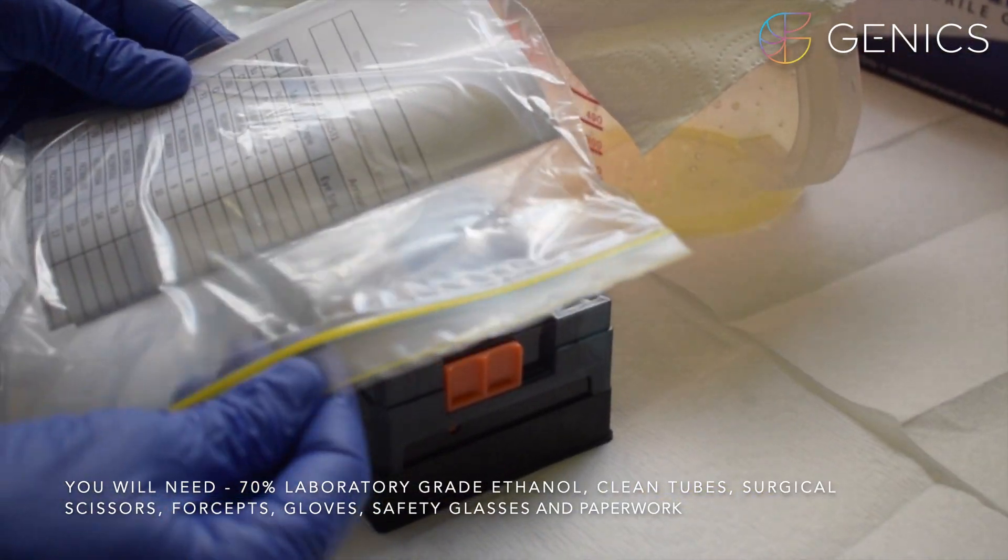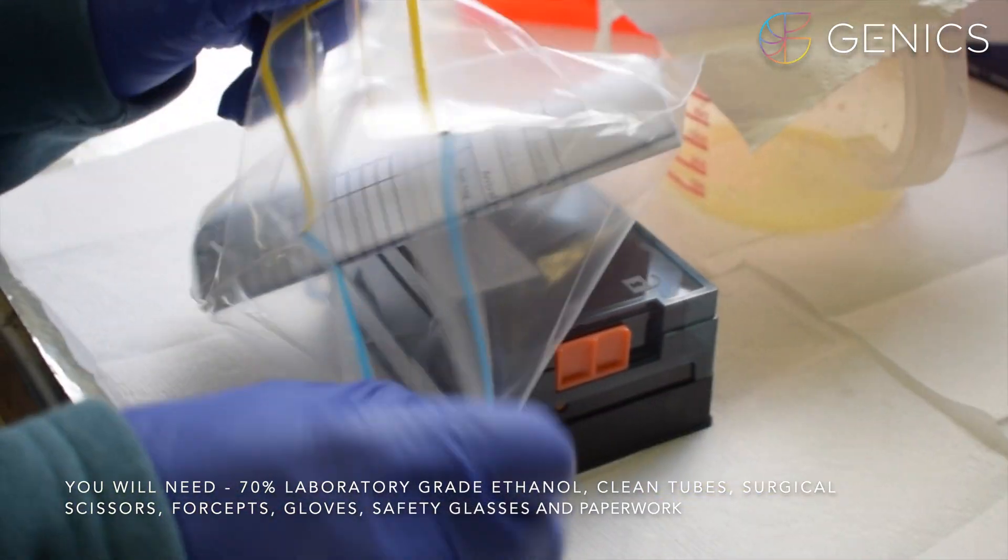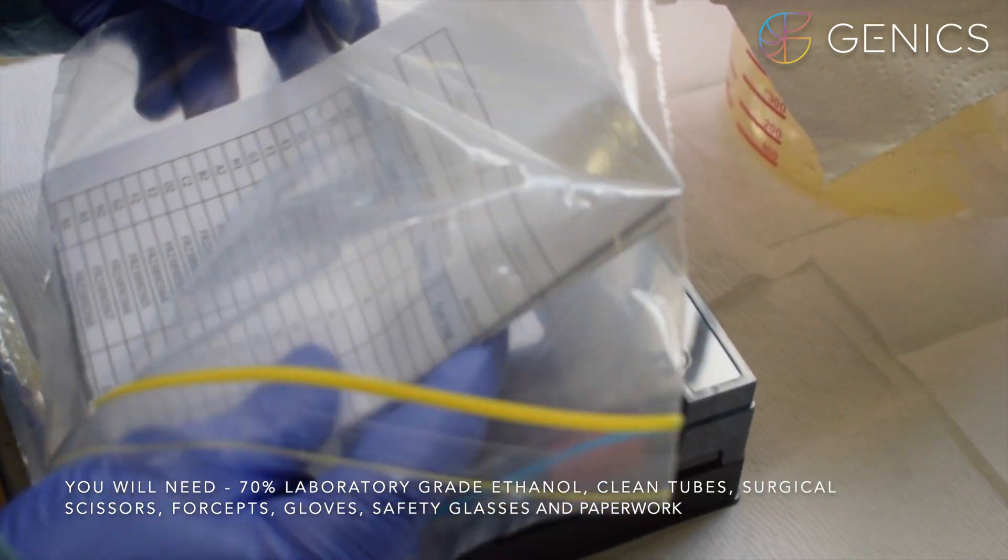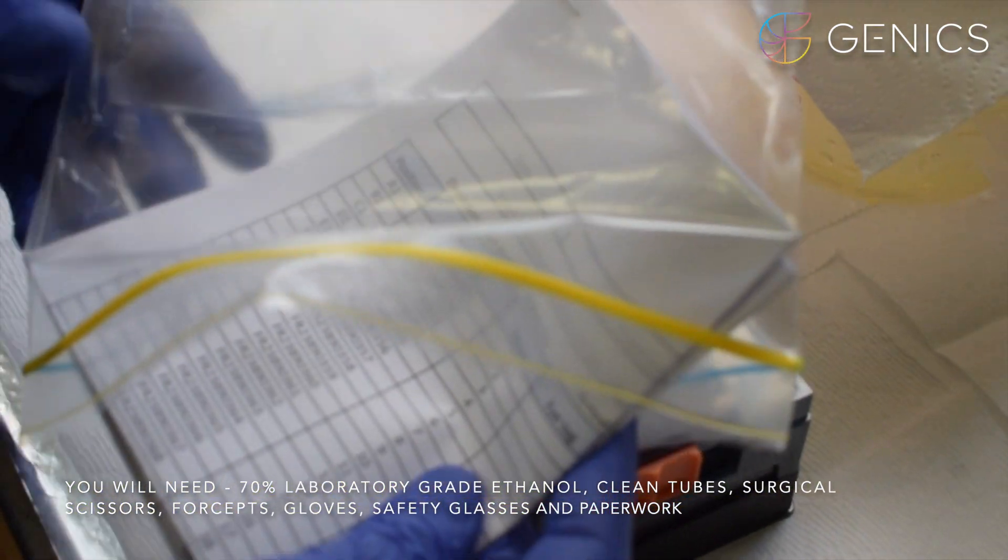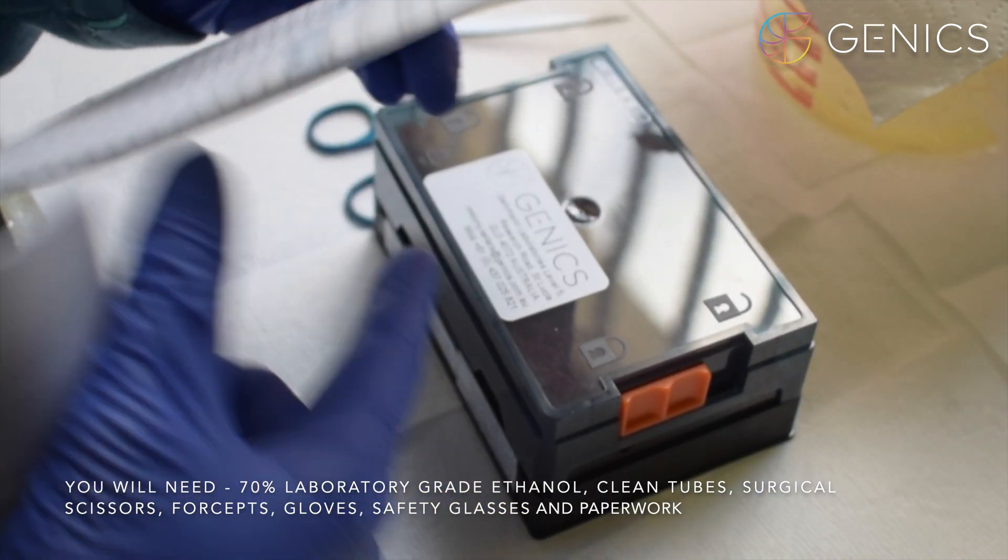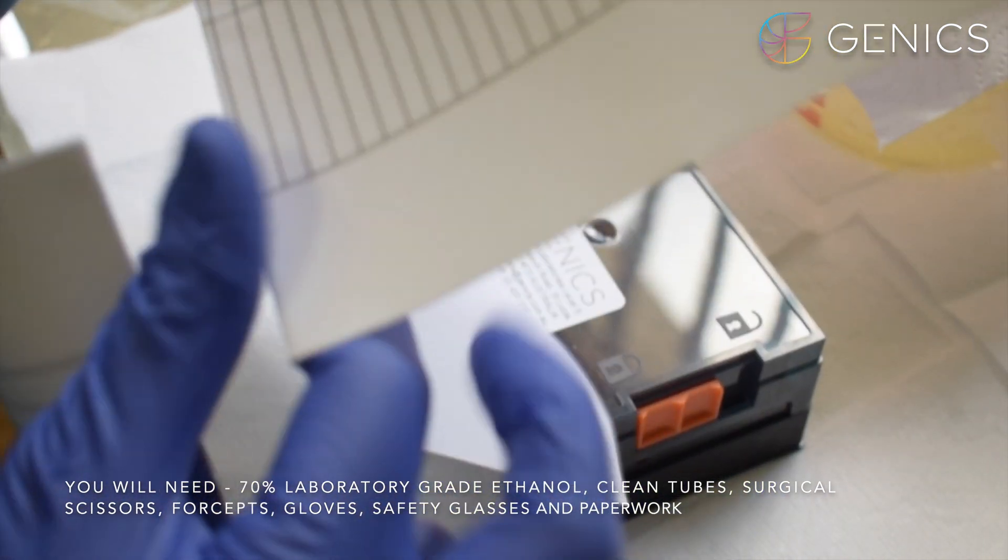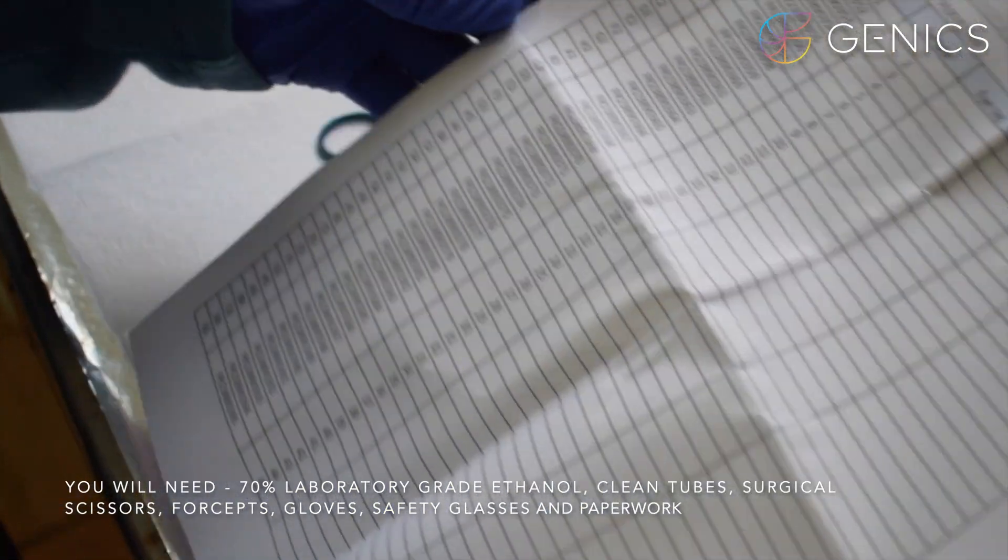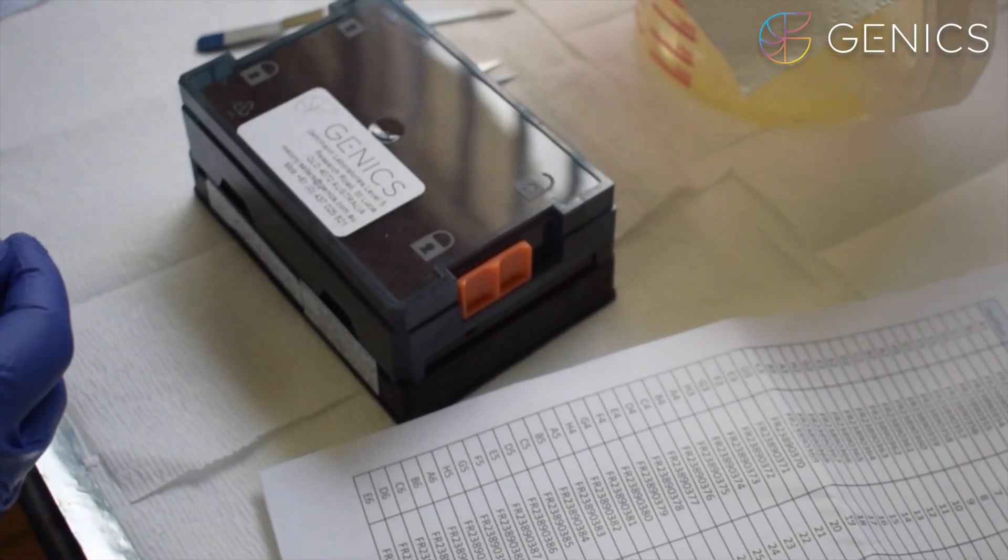Here we have the Genix tube rack which has a paper data sheet and we also send you the electronic file which matches. The first thing to check is that your skirt barcode on your tube rack matches the barcode on your data sheet.